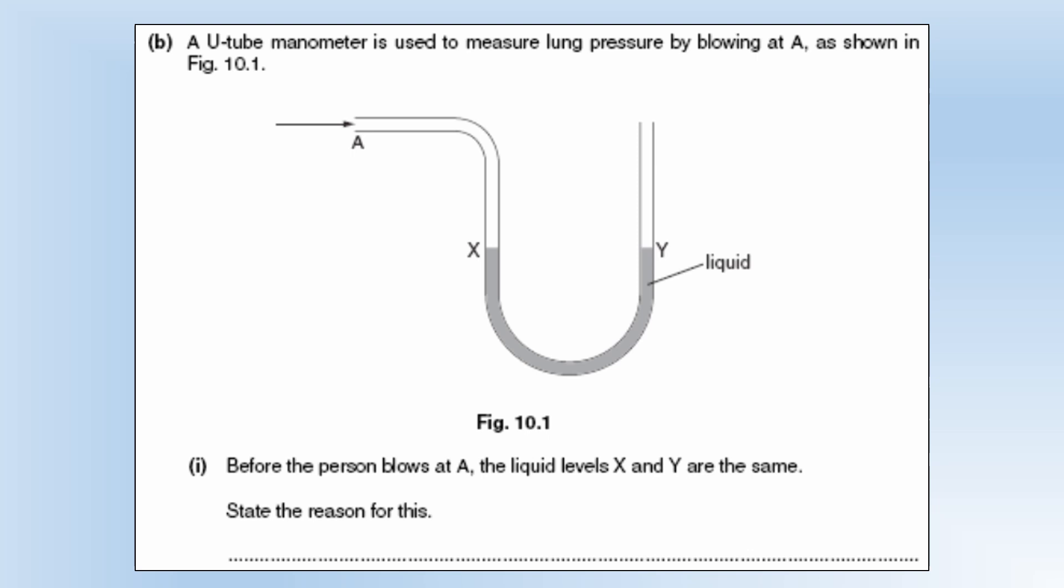A u-tube manometer is used to measure lung pressure by blowing at A as shown in the diagram. Before the person blows at A the liquid levels are the same. State the reason for this. Well if the levels are the same that means the pressure on either side must be the same and it's going to be atmospheric pressure because both sides are open to the atmosphere.